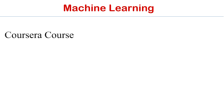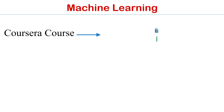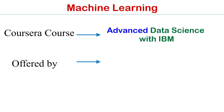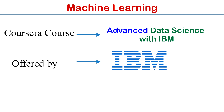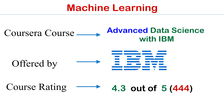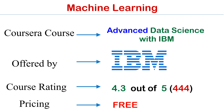Course number seven is Advanced Data Science with IBM, offered by IBM. The rating of this course is 4.3 out of 5 and the price of this course is absolutely free.